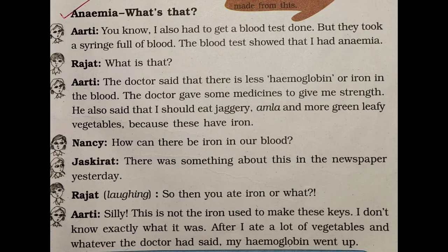The doctor also said she should eat jaggery, amla, and more green leafy vegetables because these have iron. If she takes such food items, which contain a lot of iron, the iron and hemoglobin levels in her blood will increase over time, which will be helpful for her body. That is why the doctor told her to take jaggery, amla, and green leafy vegetables.